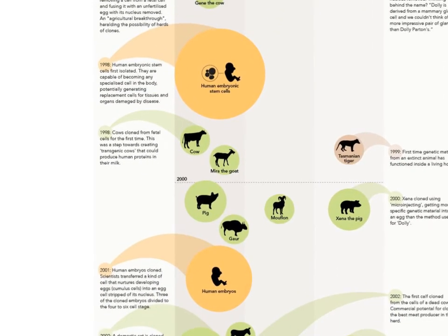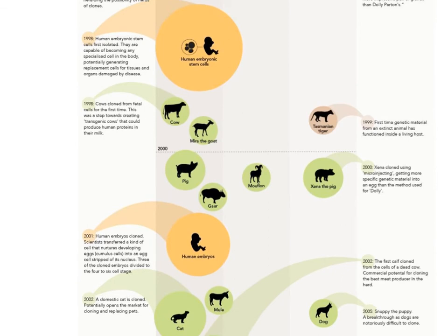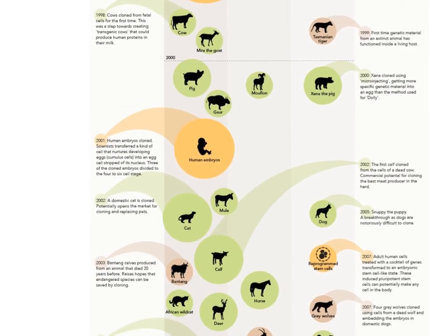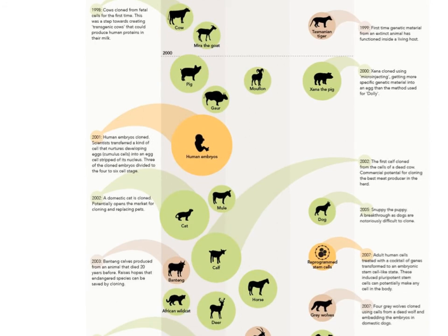In 1998, four cows were cloned from fetal cells, with the goal of possibly creating transgenic cows with human milk proteins. A similar technique was done with Mira the goat. The first attempt to clone an extinct animal came in 1999 with the Tasmanian tiger, where genes were taken from an extinct specimen and inserted into a living host. A pig, gaur, mouflon, and Xena the pig were also cloned using micro-injection, a method that targets specific genetic material — different from the Dolly method.